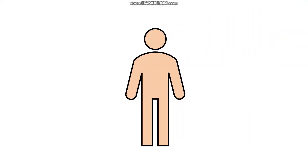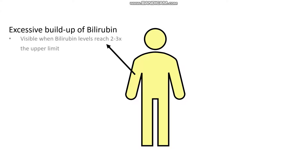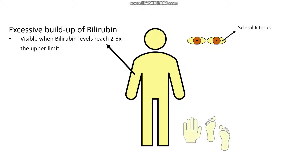Jaundice refers to a yellow discoloration of one's skin due to an excess buildup of bilirubin in our blood. Although jaundice involves an excessive buildup of bilirubin, it only becomes clinically visible when bilirubin levels reach about two to three times the upper limit of normal. This bilirubin can then get deposited in areas such as the whites of our eyes — giving us scleral icterus, where sclera refers to the whites of the eyes and icterus refers to a yellowing — or the palms of our hands and feet.